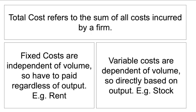Variable costs, though, are dependent on volume and are therefore directly based on output. The more you produce, the higher your variable costs are going to be. For example, if you sell out your stock and need to buy more, your variable costs add up because you need to pay for that stock in order to sell it.